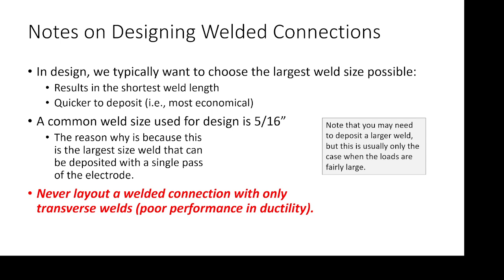Here's why. What we're ultimately interested in as engineers is the required area of weld necessary to resist the load. Area is a function of two things: the size of the weld and the length of the weld. The size can be adjusted by using a different electrode or energy input, but the length of the weld is governed by labor — the longer the weld, the longer it takes to place. The most economical welds use the largest size weld. The larger the area, the shorter the necessary length, and the quicker to deposit — which means less money. If I had a choice between a one-eighth inch weld that's 40 inches long or a quarter-inch weld that's 20 inches long, I'd go with the latter because I can deposit it faster.